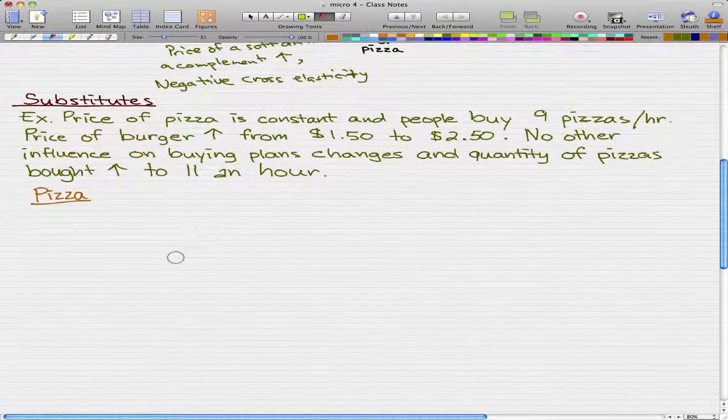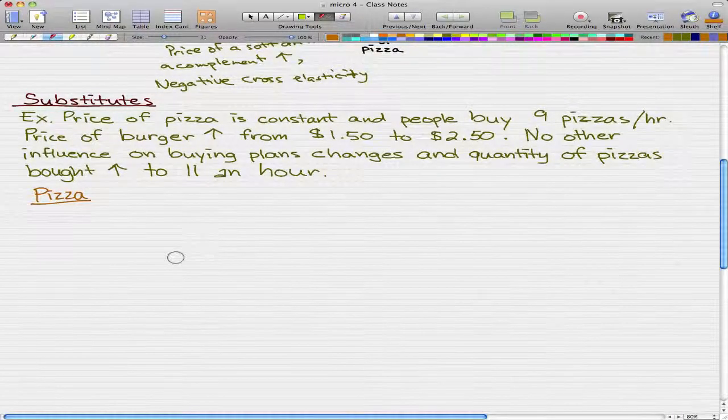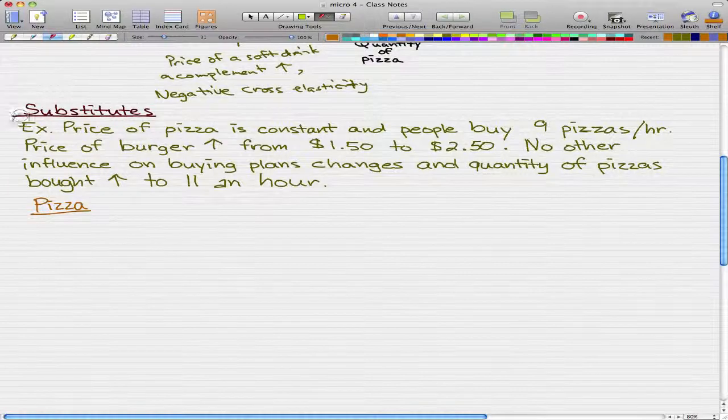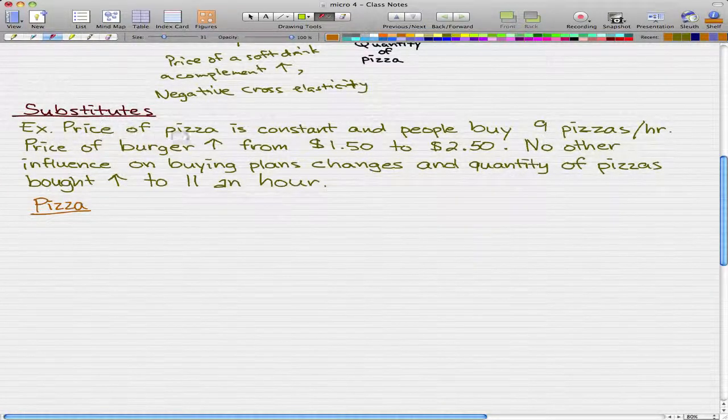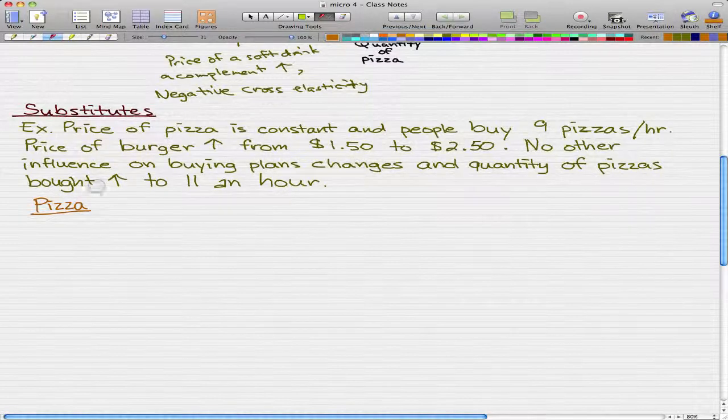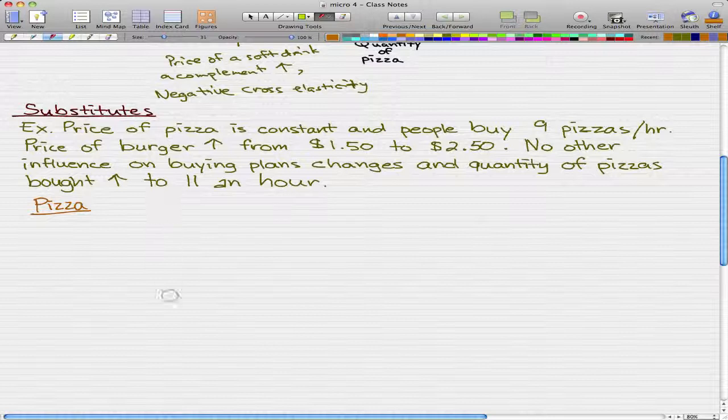In this video we're going to do an example for substitutes. The example is that the price of pizza is constant and when it's constant people buy 9 pizzas an hour. Now let's imagine that the price of burger rose from $1.50 to $2.50 and no other influence on buying plans changes. When this happens the quantity of pizzas bought increases to 11 an hour.